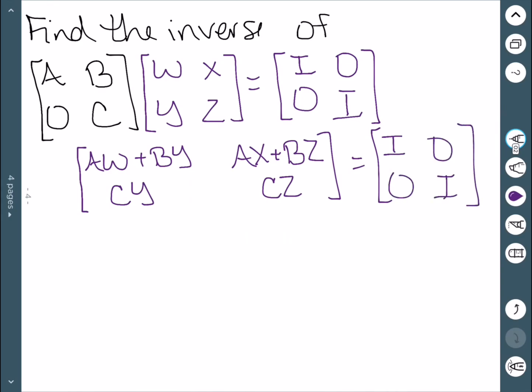And essentially now what I've done is given myself four different equations. I'm going to start with the equations that come from the second row of the matrix. CY equal to zero, and CZ equal to I.